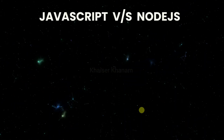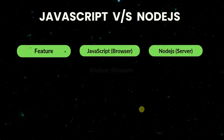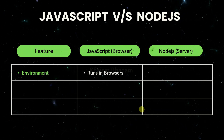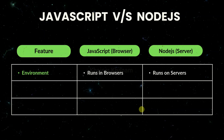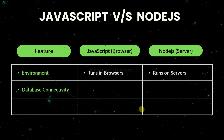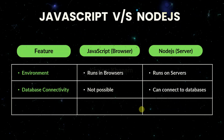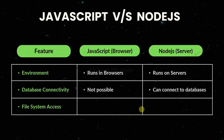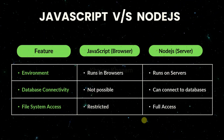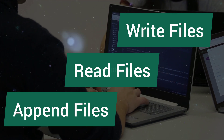Now let us see JavaScript versus Node.js. The first feature is environment: we can run JavaScript inside the browser, and using Node.js we can run JavaScript outside the browser — that is, on servers. The second feature is database connectivity: using only JavaScript it is not possible to connect to a database, but using Node.js we can easily connect to databases. The third feature is file system access: this is completely restricted in JavaScript, but with Node.js we have full access — we can read, write, and append files.